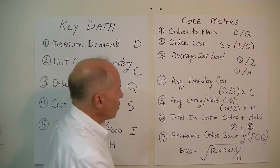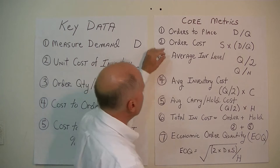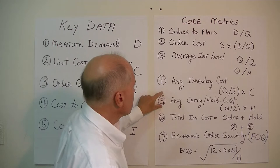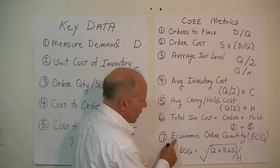Our total inventory cost in the EOQ model equals our cost to order plus our cost to store, hold, and carry the inventory. The order cost is S times D divided by Q. The carrying or holding cost uses Q divided by 2. Adding these two together gives us our total inventory cost. This formula is called the Economic Order Quantity model, or EOQ.